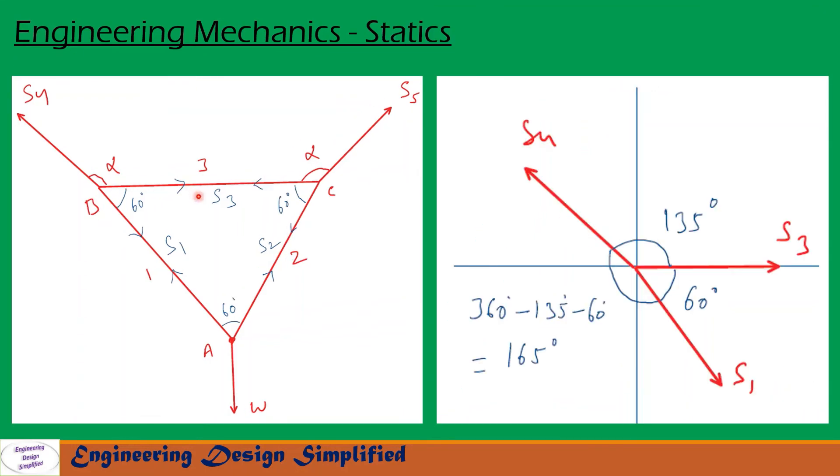In the previous slide, we have found S1 and S2. But our interest in this problem is to find S3. To find S3, let us see at point B. So at point B, S4 is acting towards this direction and S3 is acting towards this direction and S1 is acting towards this direction. Angle between S3 and S1 is 60 degrees. Angle between S4 and S3 is α. α is 135 degrees. That is given in the problem.